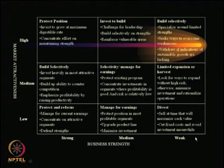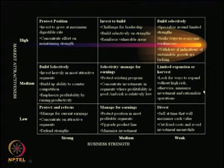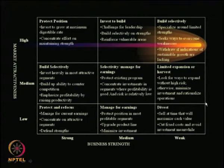If business strength is weak and market attractiveness is medium, the suggested strategy is limited expansion or harvest. Look for ways to expand without high risk — the strategy emphasizes avoiding high risk. Otherwise, minimize investment and rationalize operations. If you are unsure about the risk, minimize investment and rationalize operations to make the best possible use of the situation.